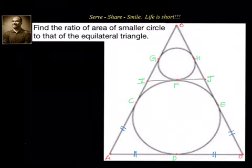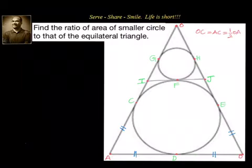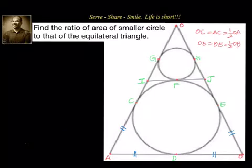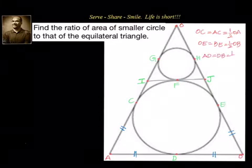Let us write that down clearly. OC is equal to AC, which is equal to half of OA. Similarly, OE is equal to BE, which is equal to half of OB. And AD is equal to DB, which is equal to half of AB.